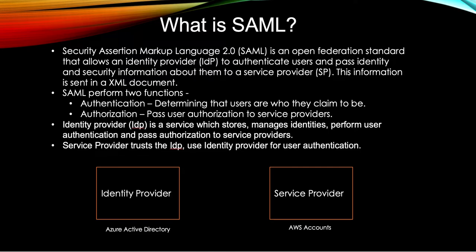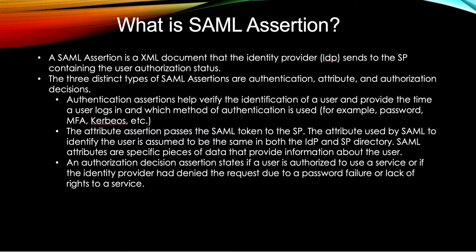Whenever you try to log in to the service provider, it goes to the identity provider asking: can you authenticate this user, can you tell me this user is who they are claiming to be? The identity provider will authenticate that user and pass the authorization about that user to the service provider. When they authenticate, they send a SAML assertion, which is basically an XML document that the identity provider sends to the service provider. It contains user authorization status, and there are three types: authentication, attributes, and authorization decisions.